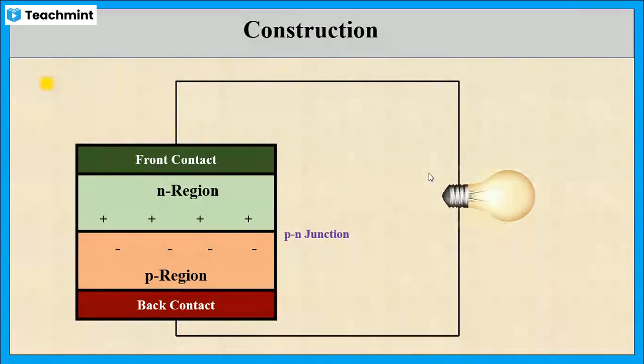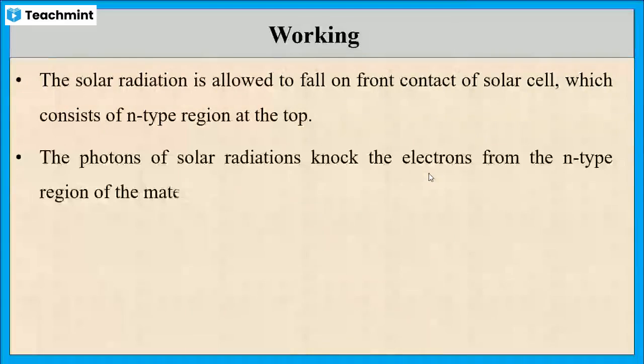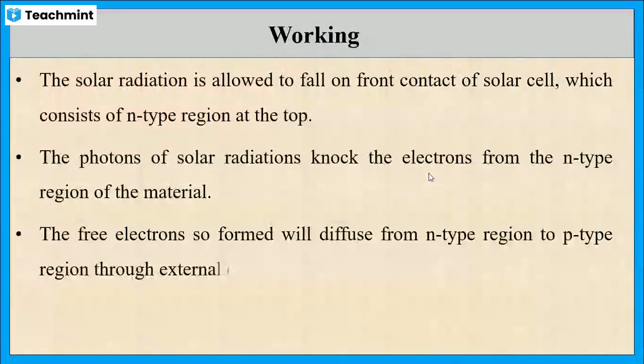Now I will once again summarize the working of solar cells. The solar radiation falls on the front contact of the solar cell which consists of the n-region at the top. The solar radiation knocks the electrons from the n-region of the metal. These electrons diffuse from the n-region to the p-region through the external circuit and produce electrical energy.